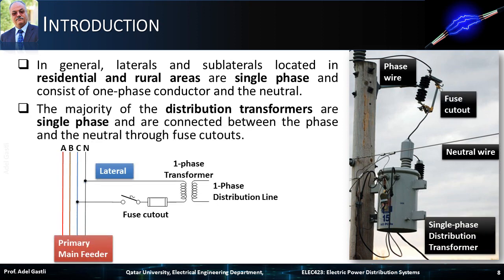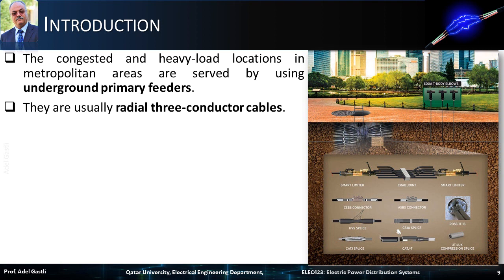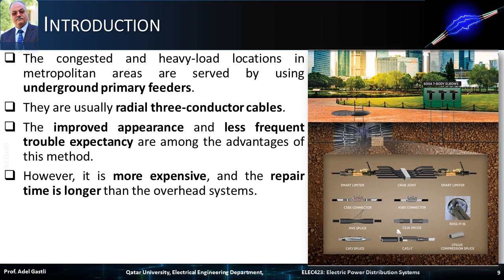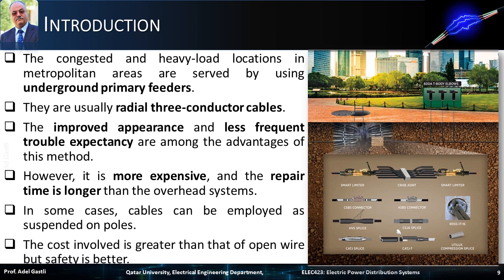The majority of the distribution transformers are single-phase, and are connected between the phase and the neutral through fuse cutouts. The congested and heavy load locations in metropolitan areas are served by using underground primary feeders. They are usually radial three-conductor cables. The improved appearance and less frequent trouble expectancy are among the advantages of this method. However, it is more expensive and the repair time is longer than the overhead systems. In some cases, cables can be employed as suspended on poles. The cost involved is greater than that of open wire, but safety is better.